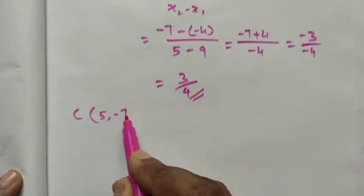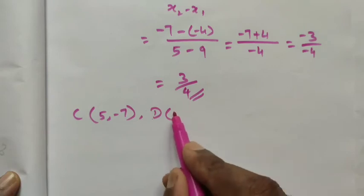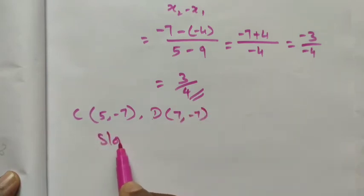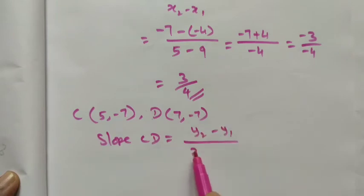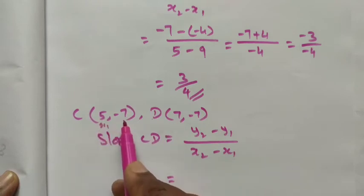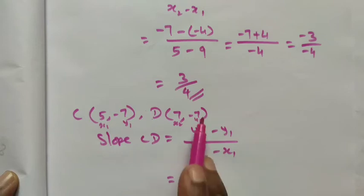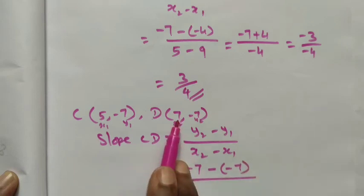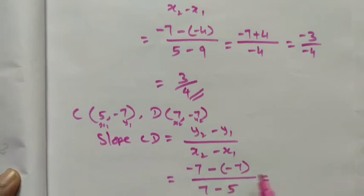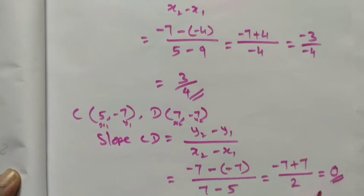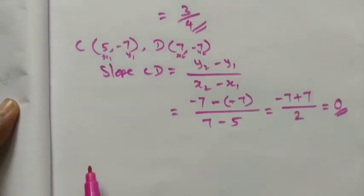Now finding the slope of CD. Point C is (5, -7) and point D is (7, -7). Slope CD = (y2 - y1) / (x2 - x1). Substituting: (-7 - (-7)) / (7 - 5) = (-7 + 7) / 2 = 0 / 2 = 0. Therefore, the slope of CD is 0.